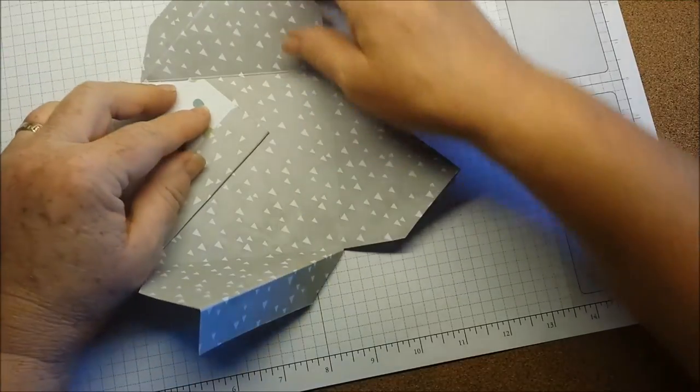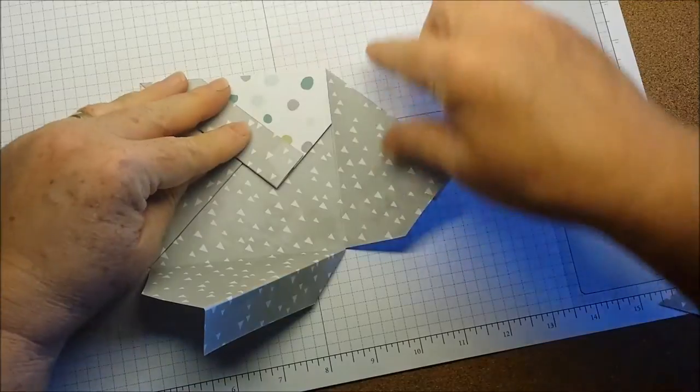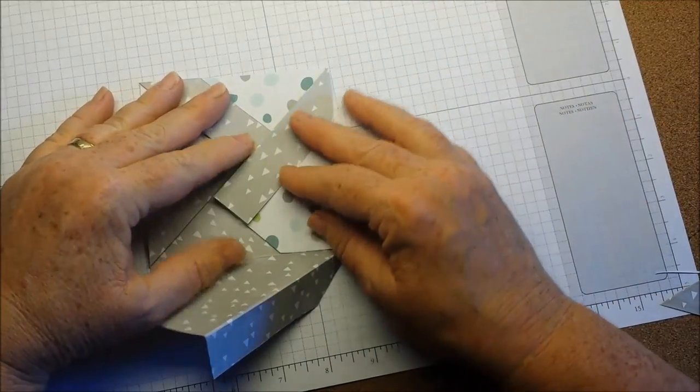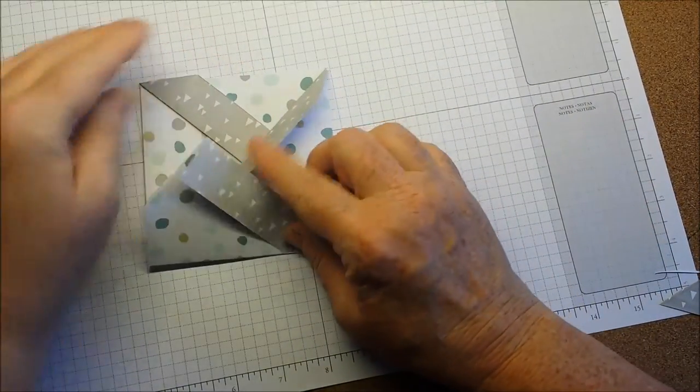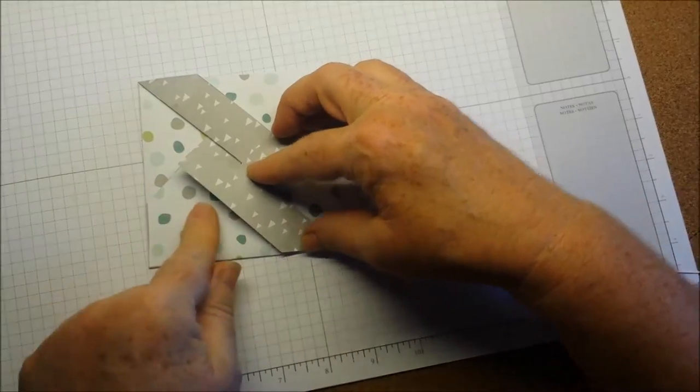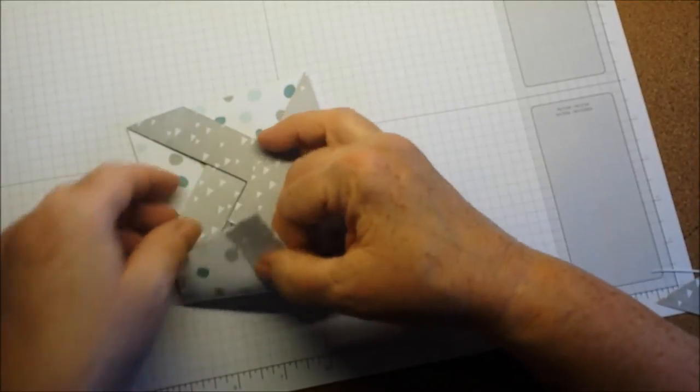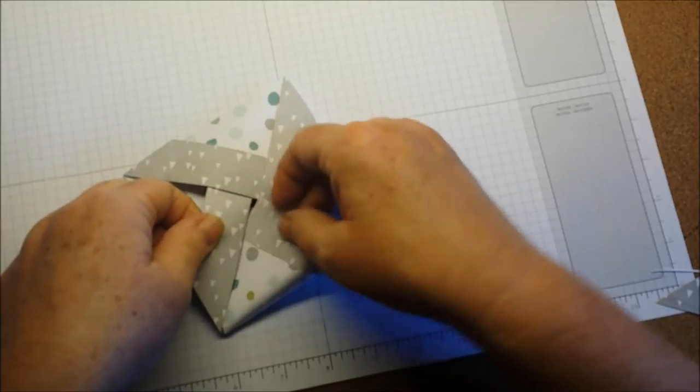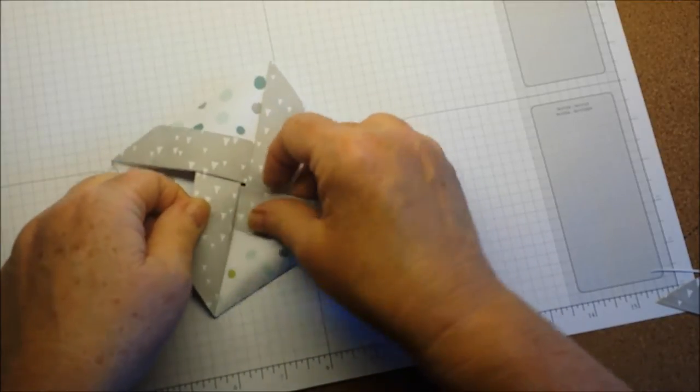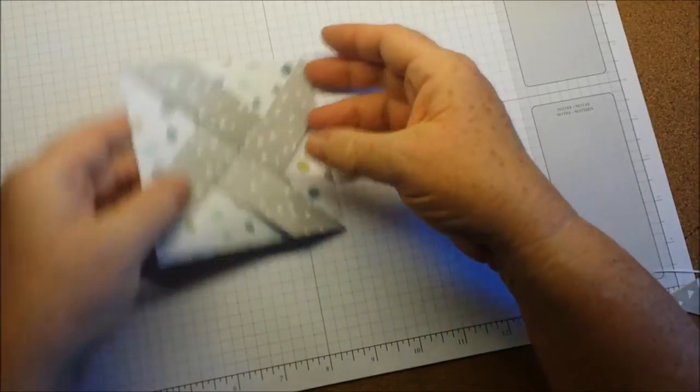You're going to tuck the short side under on each side. And then this allows this side to tuck in. And then your card is really done.